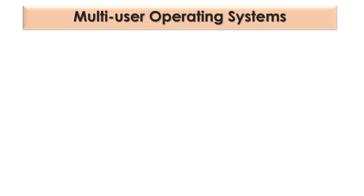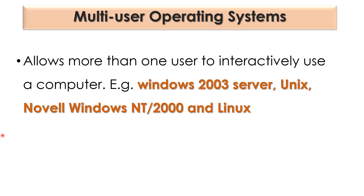There is also the multi-user operating system, which allows more than one user to interactively use a computer at the same time. Examples include Windows 2003 Server, Unix, Novell, Windows NT, Windows 2000, and Linux. Today technology is more advanced, and these systems allow more users to operate simultaneously.